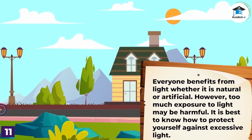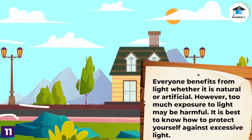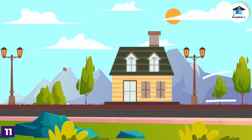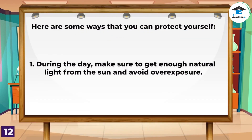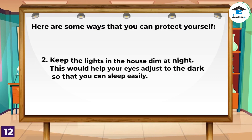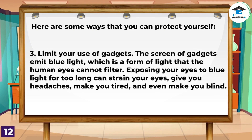Everyone benefits from light, whether natural or artificial. However, too much exposure to light may be harmful. Here are some ways to protect yourself: First, during the day, get enough natural light from the sun and avoid overexposure. Second, keep the lights in the house dim at night — this helps your eyes adjust to the dark so you can sleep easily. Third, limit your use of gadgets. The screens of gadgets emit blue light, which is a form of light the human eyes cannot filter. Exposing your eyes to blue light for too long can strain your eyes, give you headaches, make you tired, and even make you blind.